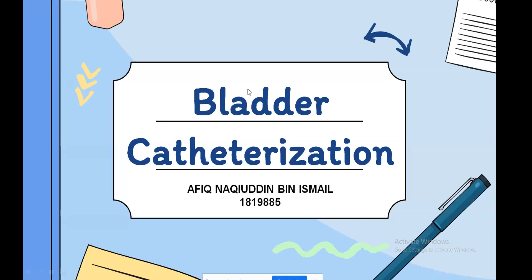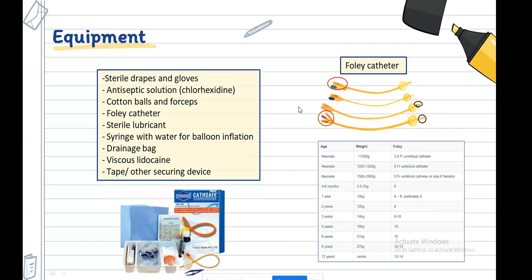Assalamualaikum warahmatullahi wabarakatuh. My name is Afiq Nafidul Ismail and today I will cover the topic of bladder catheterization. The equipment for bladder catheterization can be found in the catheterization kit and includes: sterile drapes and sterile gloves, antiseptic solution such as chlorhexidine, cotton balls and forceps, the catheter — usually a Foley catheter — sterile lubricant, syringe with water for balloon inflation, a drainage bag, viscous lidocaine as local anesthesia, and tape or securing device.